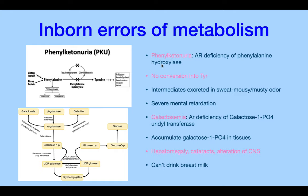Phenylketonuria is an autosomal recessive deficiency of phenylalanine hydroxylase. Without it, phenylalanine can't convert to tyrosine, so catecholamines, thyroxine, and melanin aren't produced. Intermediates are excreted in sweat, giving the child a mousy or musty odor. There is severe mental retardation due to lack of neurotransmitters.